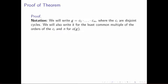Now let's begin the proof of the theorem. Before we really get started, we want to introduce some notation to make our life a little easier. We want to write g as a product of cycles: c1, c2, all the way out through c_m, where c stands for cycle. So we take the element g and write it as m cycles, c1 through cm, and these cycles are assumed to be disjoint.